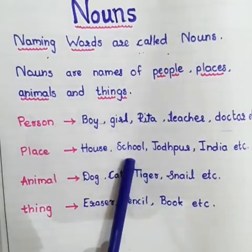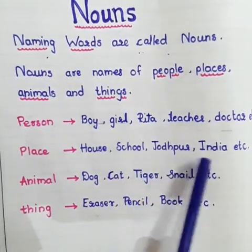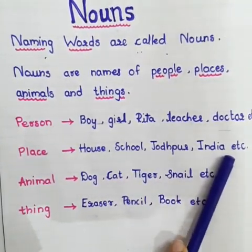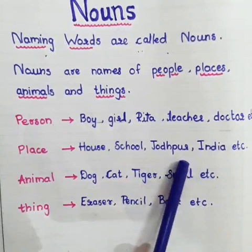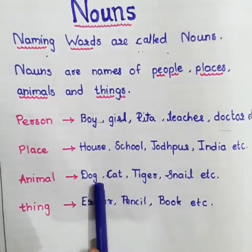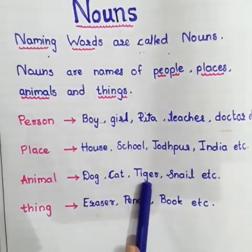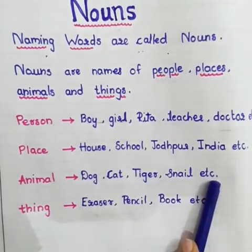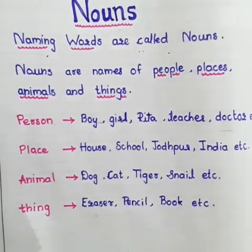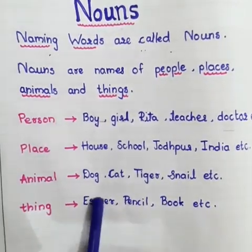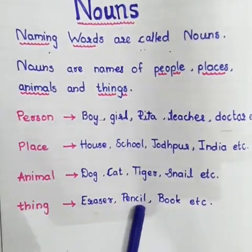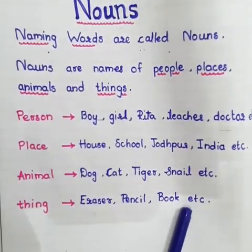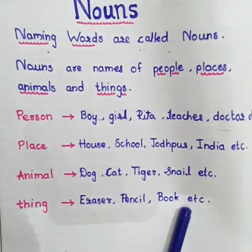House, school, Jodhpur, India, etc. are names of places. Dog, cat, tiger, snail, etc. are names of animals. Eraser, pencil, book, etc. are examples of things.